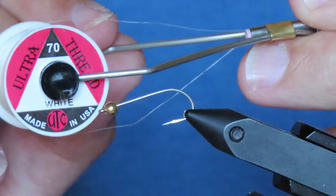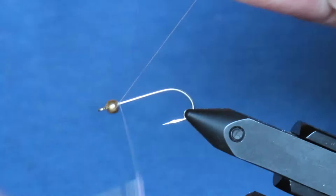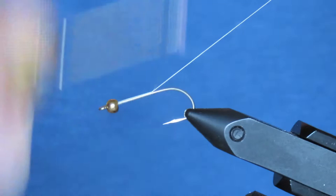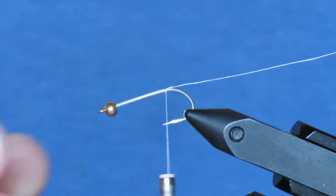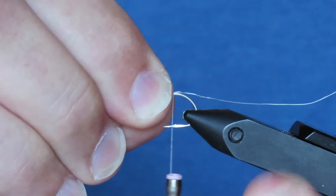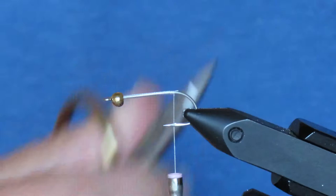Now any 8-0 white thread will do. I'm using Ultra Thread. So start your thread just behind the bead, and then wrap it backwards to a point just opposite where the barb would have been. And I'll reset the hook to a horizontal position and trim away the excess.